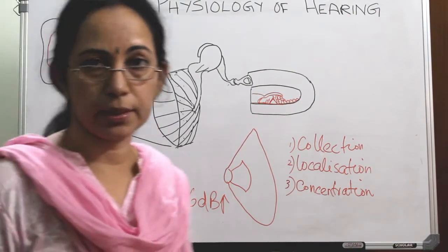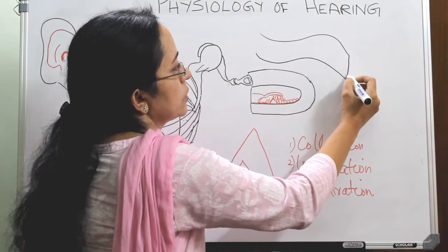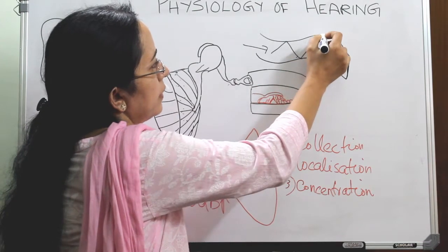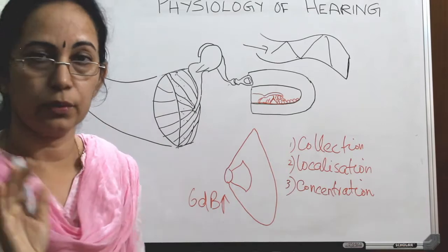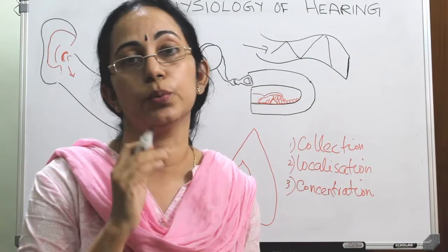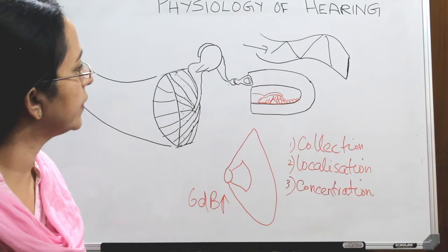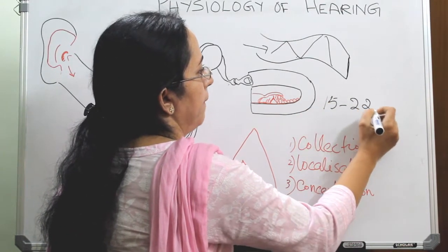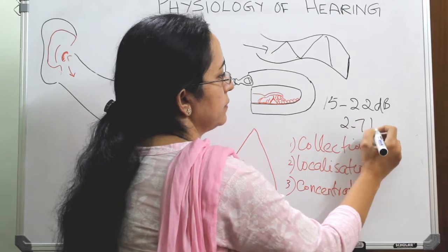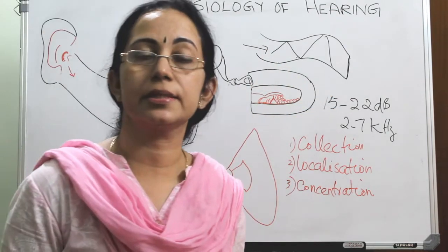What is the role of the external auditory canal? The external auditory canal is an S-shaped tube with one end closed by the tympanic membrane. Sound signals coming in will hit and vibrate on the walls of the canal. The external auditory canal acts as a resonating tube, causing an increase in intensity of around 15 to 22 dB, mainly in a frequency range of 2 to 7 kilohertz. Together with the pinna, the external ear gain is around 25 dB.